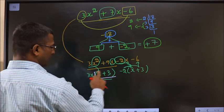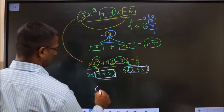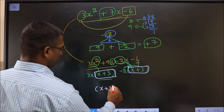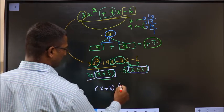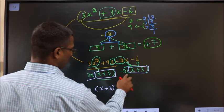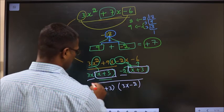Okay. Now, take x plus 3 common. So, if I take x plus 3 common here left out with 3x. Here left out with minus 2. Thus, we have factorized this is our answer.